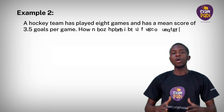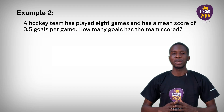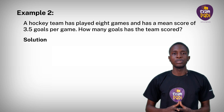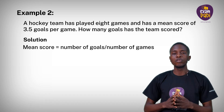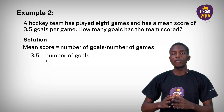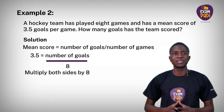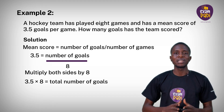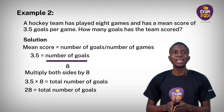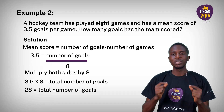Example 2: A hockey team has played 8 games and has a mean score of 3.5 goals per game. How many goals has the team scored? Solution: mean score equals number of goals divided by number of games. 3.5 equals number of goals divided by 8. Multiplying both sides by 8: 3.5 multiplied by 8 equals total number of goals. Therefore, 28 equals total number of goals. So we can say the total number of goals the team has scored is 28.